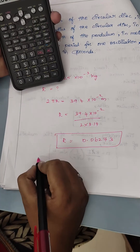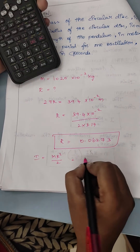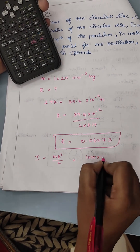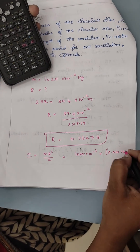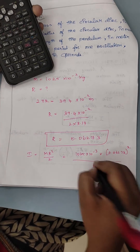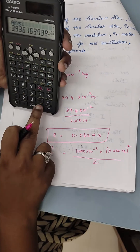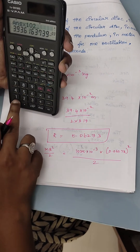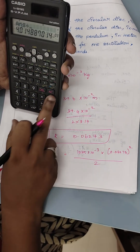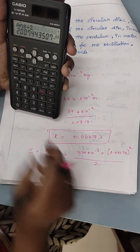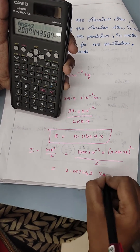Now we have M and R, so we can find I = M·R² / 2. M = 1025 × 10⁻³, and R = 0.06273. Squaring R and multiplying by M, then dividing by 2 gives I = 2.007443 × 10⁻³ kg·m².